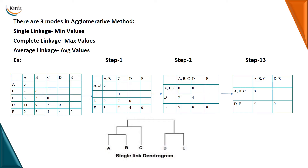Here is an example with five data objects: A, B, C, D, E. In step one, I am combining A and B together using single linkage, which takes minimum values. When combining A and B: A-A is zero, B-A is two, B-B is zero — the minimum of these is zero, so I write zero. For C: C with respect to A is six, C with respect to B is three — minimum is three, so I write three.